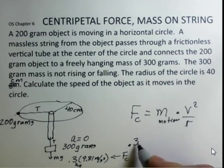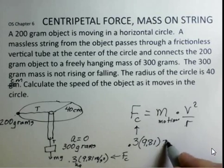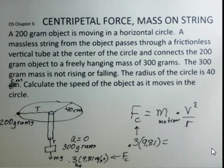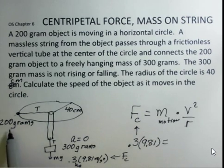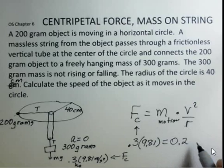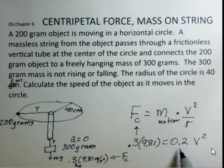So 0.3 times 9.81, that's our centripetal force. What should I use for the M in MV squared over R? Now the mass that's in motion in the circle is the M in MV squared over R. That's 200 grams, so I use 0.2 kilograms. Then we have the unknown, the velocity squared, and we're just calculating speed here. The direction is always tangent to the circle, and then we have the radius.